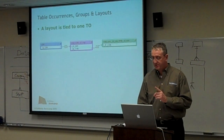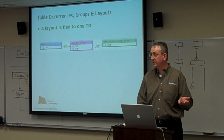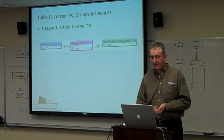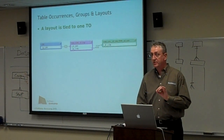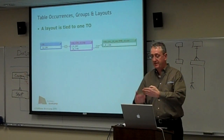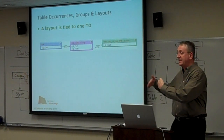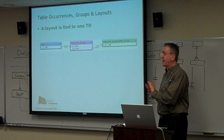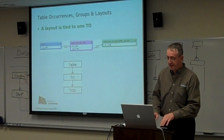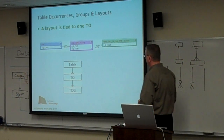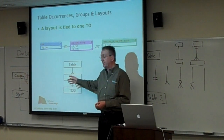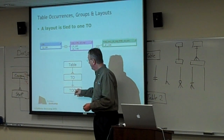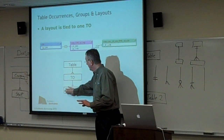Typically a layout is tied to one table occurrence. In FileMaker, it used to be in pre-7 that a layout was always tied to the file you're in. But now that we have multiple tables in the file, you're tying a layout to a table occurrence — not just a table. Your layout is based on a table occurrence, which could be one of many table occurrences related to that base table. So it's important to have a convention where you base your layouts on a table occurrence that's reliable. Each table occurrence exists only in one table occurrence group.